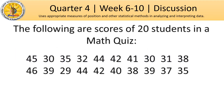For our main discussion, let us have this set of data — the scores of 20 students in a math quiz. The scores are as follows: 45, 30, 35, 32, 44, 42, 41, 30, 31, 38, 46, 39, 29, 44, 42, 40, 38, 39, 37, and 35. We will use this set of data in our discussion, which will cover the things that you will need for your Week 6 to 10 activity sheets.